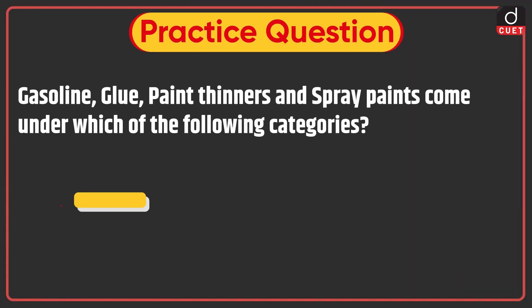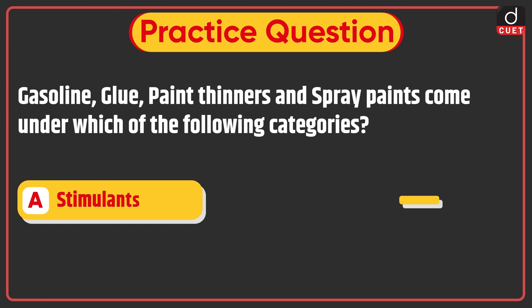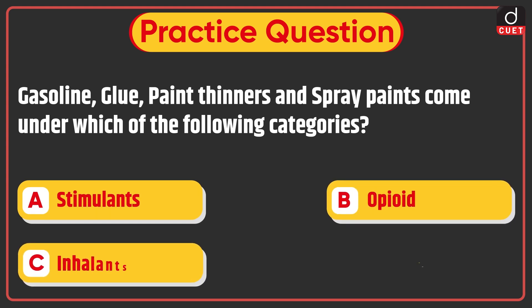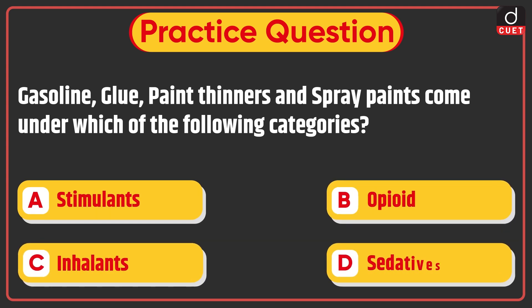Now it's time for the practice question. Gasoline, glue, paint, thinners, and spray paints come under which of the following categories? Stimulants, Opioid, Inhalants, or Sedatives? Send the answer to this question in the comment section.